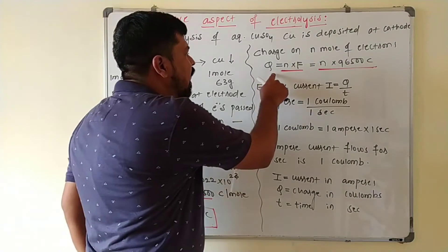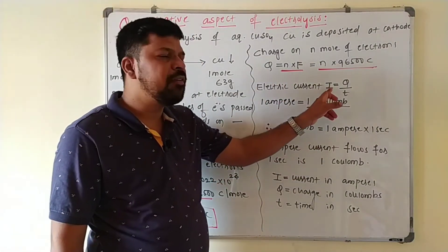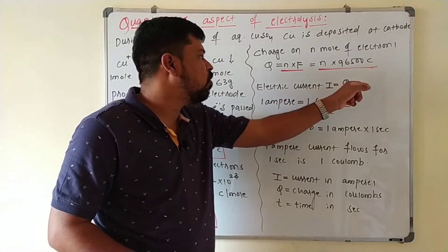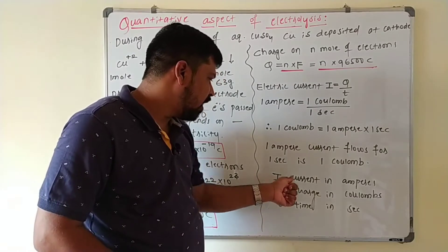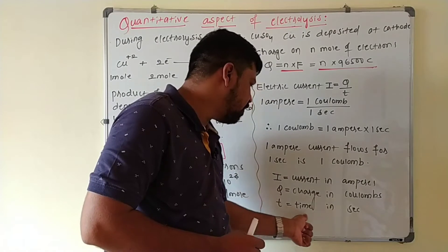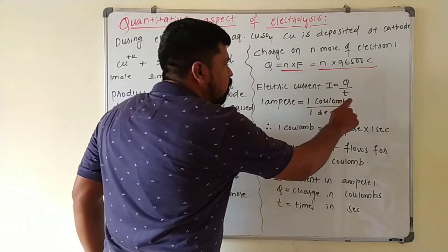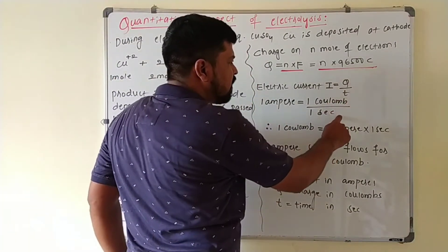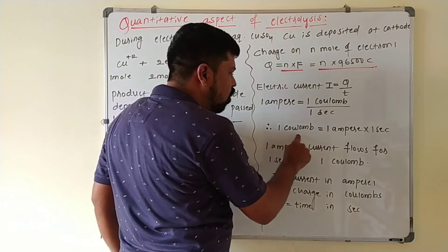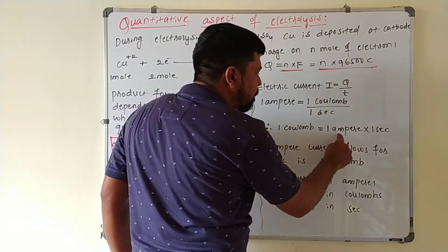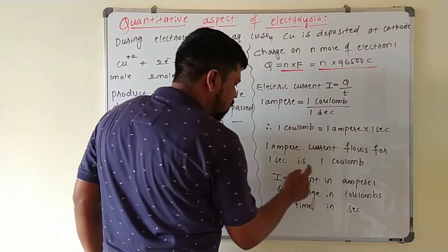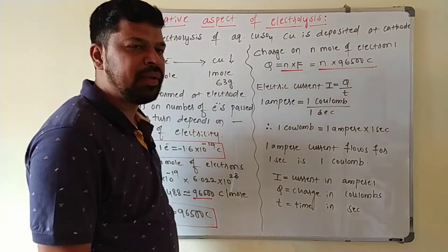Q is calculated from the current I and time T: I = Q / T. I is current in amperes, Q is charge in coulombs, T is time in seconds. If one coulomb of charge flows for one second, that equals one ampere. Rearranging: one coulomb = one ampere × one second. If one ampere flows for one second, that equals one coulomb.